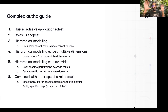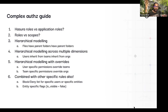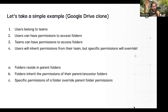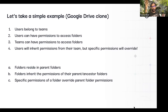When thinking about all of these different combinations, I've started working on a guide to help think about this more easily. Let's take a Google Drive kind of example and flesh that out. In this scenario, we have users and teams. Users can have access to folders, teams can have access to folders. Users will inherit permissions from their team, but specific permissions for a folder for a user will override that.